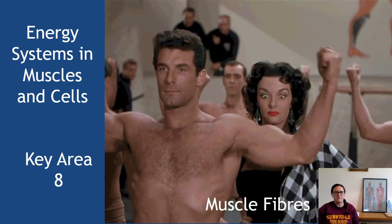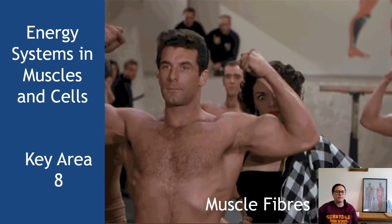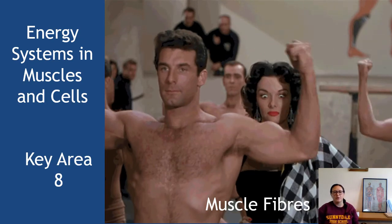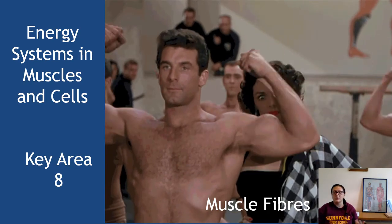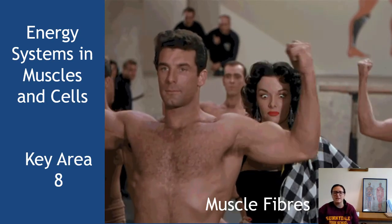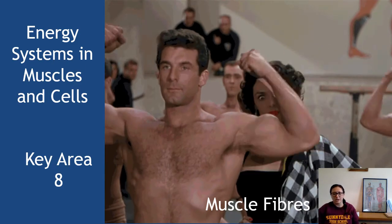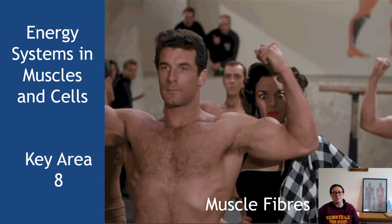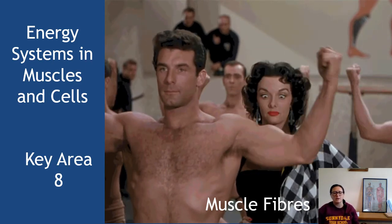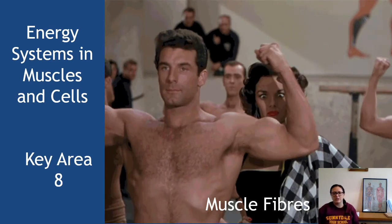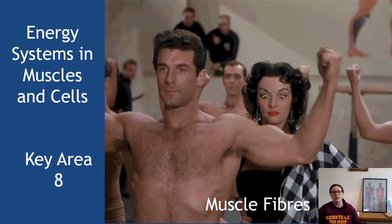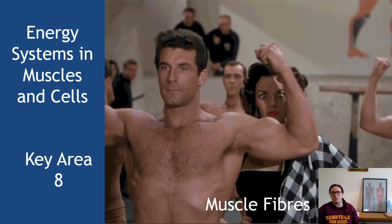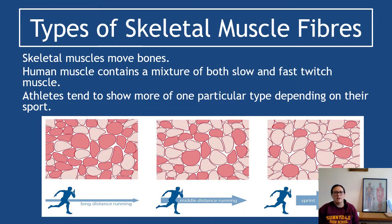We're on to the final video for unit one of Higher Human Biology. This is still the energy systems and muscles and cells key area, and we're looking at muscle fibers this time. Last video we looked at lactate metabolism; this time we're looking at different muscle fibers and how they supply energy for movement.